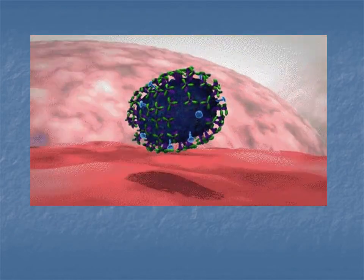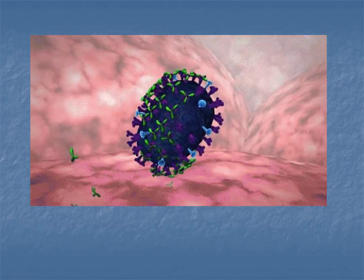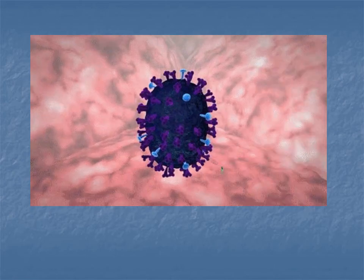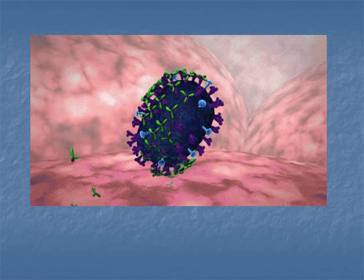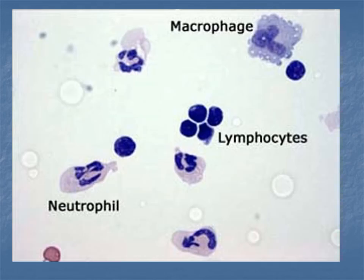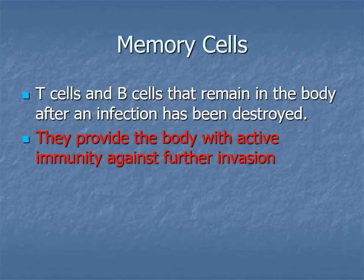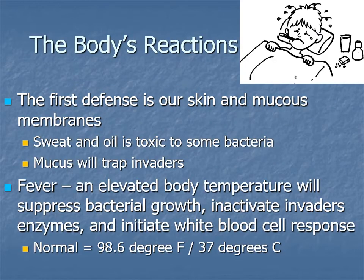The antibodies smother the virus, making it bounce off the cell because it messes up the virus's shape so it can no longer trick the cell into taking it in. Macrophages and lymphocytes are white blood cells — dyed purple in microscope images so you can see them. The end result is memory cells: T and B cells that remain in the body after an infection has been cleared, providing active immunity so the virus is killed off right away if encountered again.